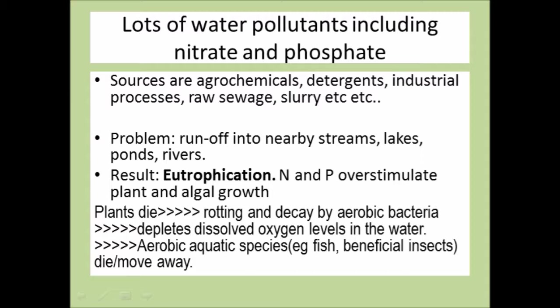And the problem with nitrate and phosphate is actually that they're too good at stimulating growth. That's why farmers use them. And so if you get nitrate and phosphate entering a body of water, they will actually lead to a rapid overgrowth of algae and also pond side plants as well, riverside plants.